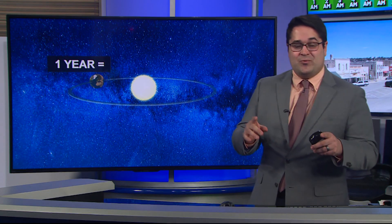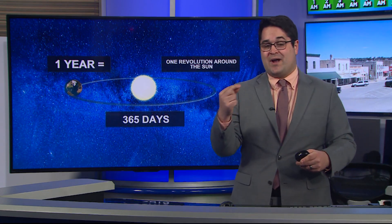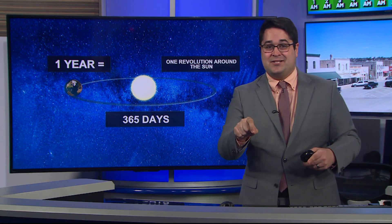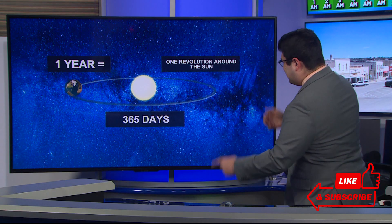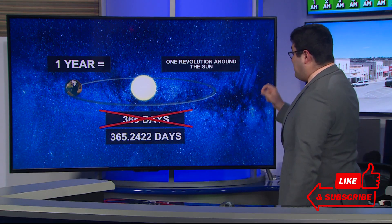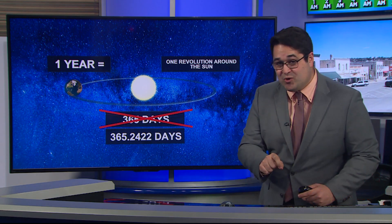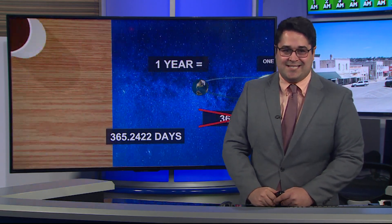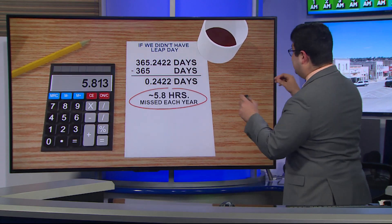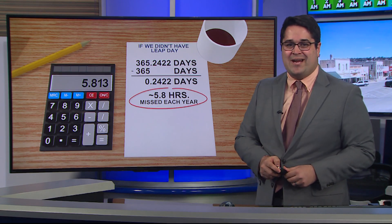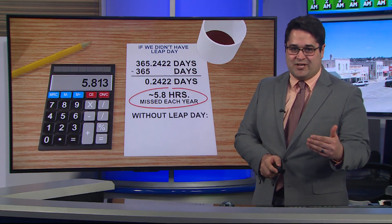One year is equal to the time it takes for one revolution around the sun, ending up right back in the exact same point you started a year ago. You think that's 365 days, but it actually isn't — it's 365.2422 days. So a year is actually a little bit longer than 365 days, and that extra rough quarter of a day turns out to be approximately 5.8 hours that we miss year after year.